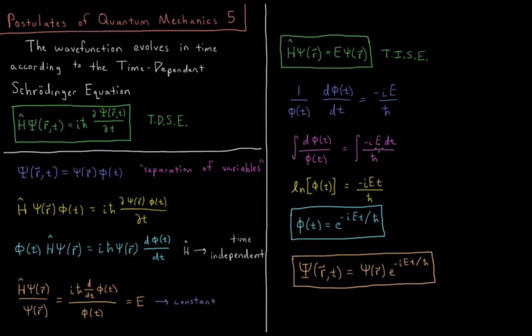Integral minus IE dt over h-bar. Everything in here is a constant, so it just gives us minus IE t over h-bar. We can take the exponent of both sides. We'll get E to the log of phi. It cancels and gives us phi. E to the minus IE t over h-bar over here. So we have phi of t equals E to the minus IE t over h-bar.